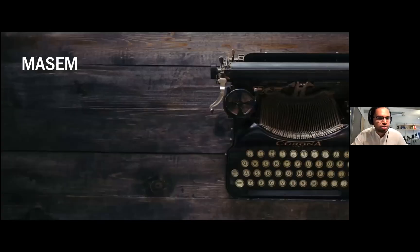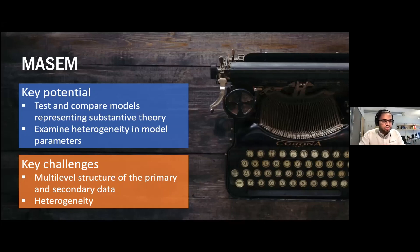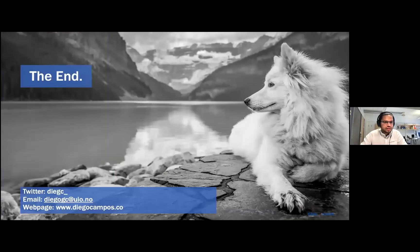In summary, with MASEM you can test and compare models representing substantive theory and examine heterogeneity in model parameters. There are still challenges to be addressed: it doesn't support multi-level structures, so for example you cannot have more than one correlation matrix per sample or incorporate hierarchical structures such as students nested in classrooms. Another limitation is that good fit of the SEM model on the average correlation matrix doesn't translate to proper fit on each of the individual studies used in stage one, which could be a source of bias. Thank you for your attention.